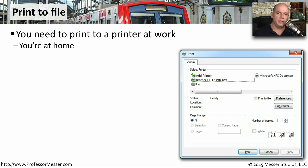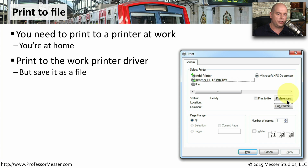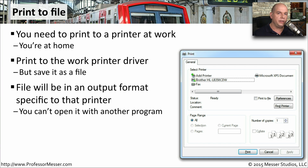One way to print virtually is to print to a file. This is useful if you're at home but your printer is at work — you can take the output of what you've been working on and save it somewhere on your hard drive so that when you get to work, you'll be able to print it out. There's a function in the print driver itself called print to file. You can check that and it will save the file in a very specific output format that can be read by that specific printer — already in the printer language. This is not something you'll be able to load into another program and edit afterwards; it's in its final form.